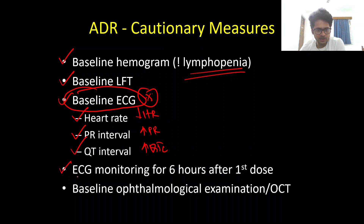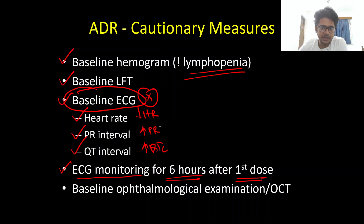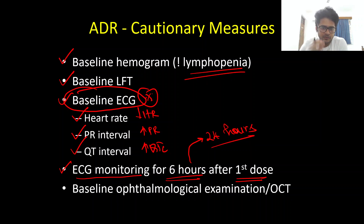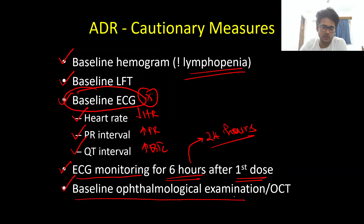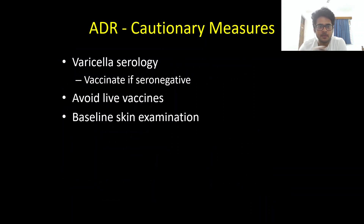For Fingolimod specifically, it is vital to perform ECG monitoring for a minimum of 6 hours after giving the first dose. If the patient has any ECG abnormalities during this period, the monitoring may need to be extended to around 24 hours. This first-dose monitoring looks for bradycardia, PR prolongation, and QTc prolongation. A baseline ophthalmological examination — including visual acuity, fundus examination, and OCT — is also important, since Fingolimod can cause macular edema.